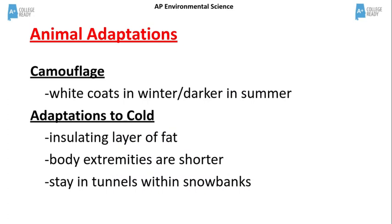Animal adaptations in the tundra include camouflage, where the coats are white or lighter in winter and darker in summer. Adaptations to the cold include an insulating layer of fat, shorter body extremities such as ears to reduce heat loss, and behavioral adaptations such as staying in tunnels within snow banks.